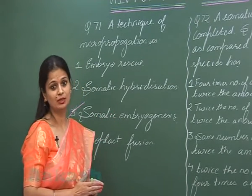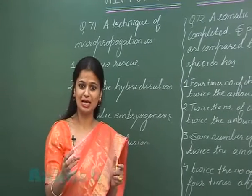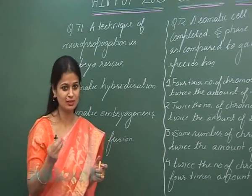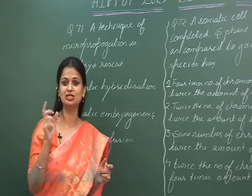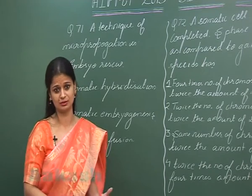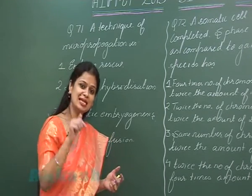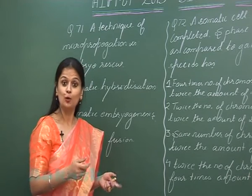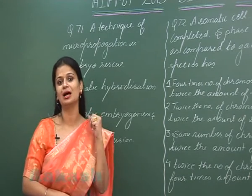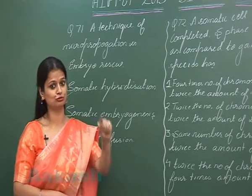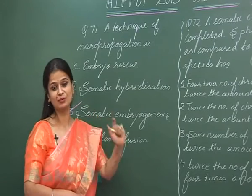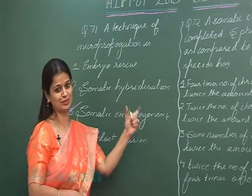Coming to the first option: while forming sexual hybrids, generally in the seed the endosperm degenerates. Under such conditions, the survival of the embryo is difficult. So what we do is save the embryo — we remove the embryo from the seed and form a new plant from it through tissue culture. This saving of the embryo through tissue culture of the hybrid is called the embryo rescue technique.